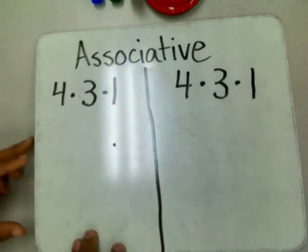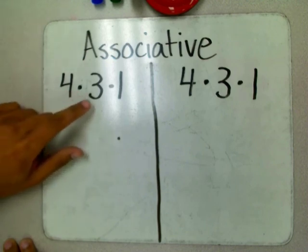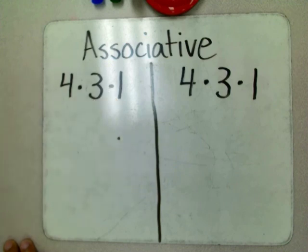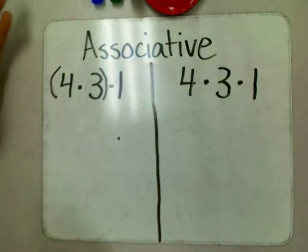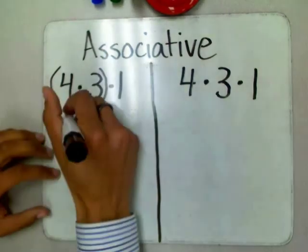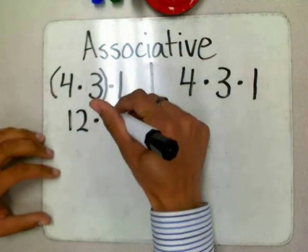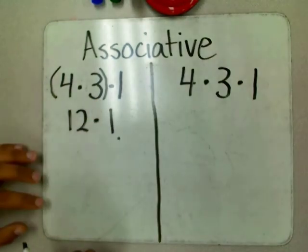Mr. Smith came prepared today. Here we have it: four times three times one. If we were to solve this problem from left to right, we would first take care of four times three. Four times three is equal to twelve. But we still need to multiply by our third factor, which is one. Twelve times one is equal to twelve.